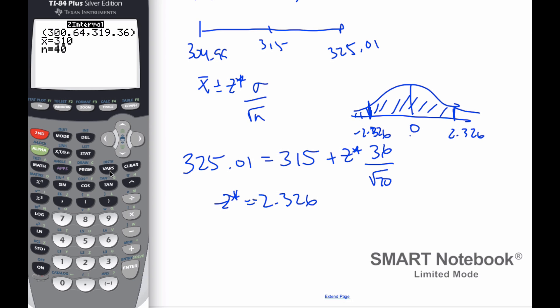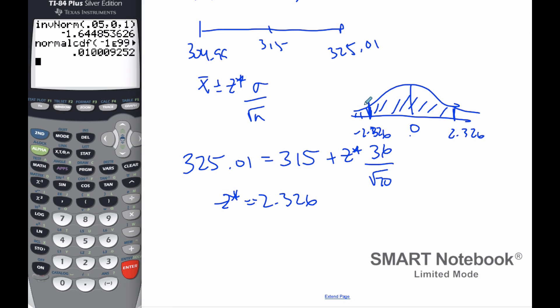So if I go second, I'm going to go 2. I'm looking for an area, so I go to number 2. My lower level is negative 999, my upper level is going to be negative 2.326, 0 and 1. And when I do that, I get this area here, 0.01. So if I multiply that times 2, that means together these areas are 0.02. And so what I have left in the middle here is 98%.